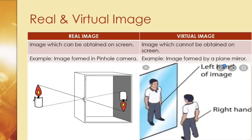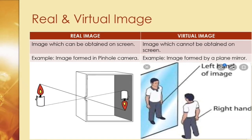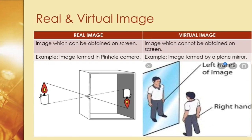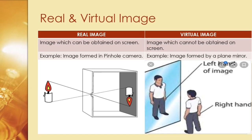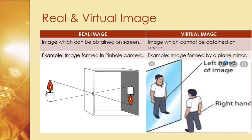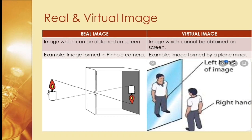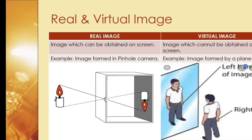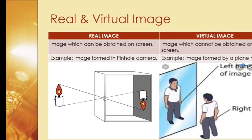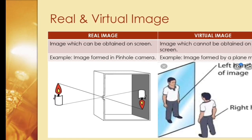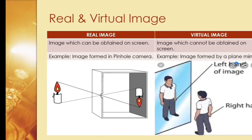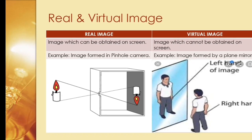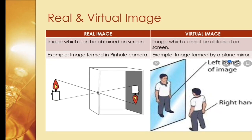Hello students. In the previous video you have studied about the characteristics of image formed by a plane mirror and you came across the word virtual image. There are two types of image: real image and virtual image. Real image is the one which can be obtained on a screen, whereas virtual image cannot be.